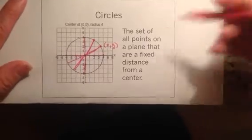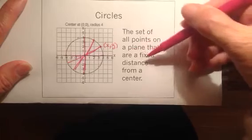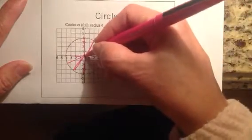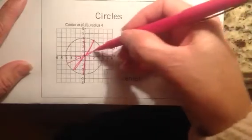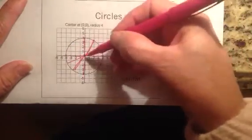We define a circle as the set of all points on a plane that are a fixed distance from a center. So this circle here is centered at 0, 0, and they are all at a unit of 4 units from that center.